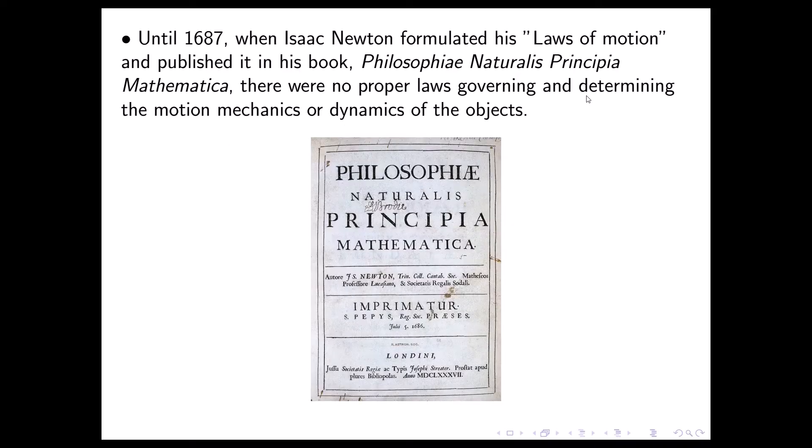The first one is Sir Isaac Newton. Until 1687, there were no proper laws governing and determining the motion mechanics or dynamics of objects. In 1687, when Isaac Newton formulated his laws of motion and published it in his book Philosophiae Naturalis Principia Mathematica, we have laws of motion. This is the book. This is the cover page. Just for your impression.